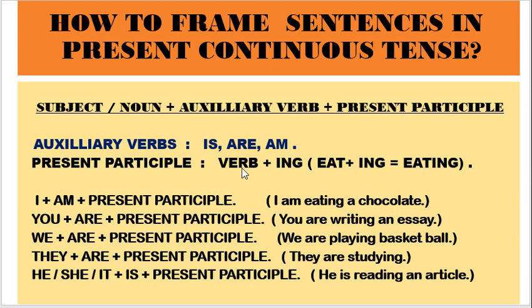Now let's look at verb forms. Verb forms are different — we have root verb, past tense form of the verb, and past participle. Here we need to use the present participle. The root verbs are words like eat, write, drink, sleep, study — verbs without any change, as they are, are called base verbs or root verbs. To form the present participle we add -ing to the verb: eat + ing gives us 'eating', write + ing gives us 'writing', play + ing gives us 'playing'.